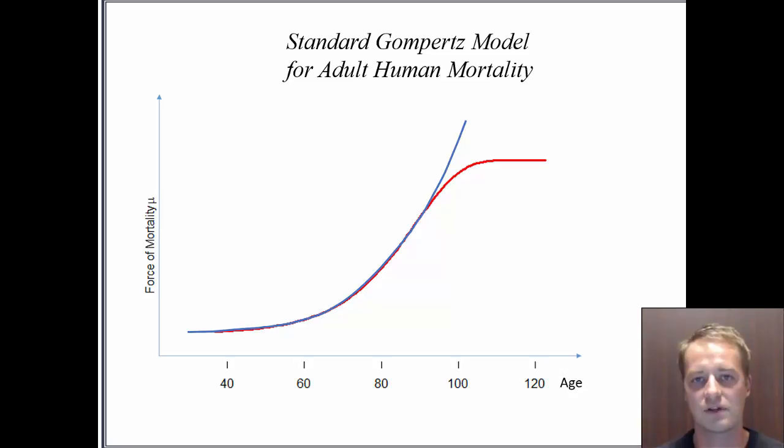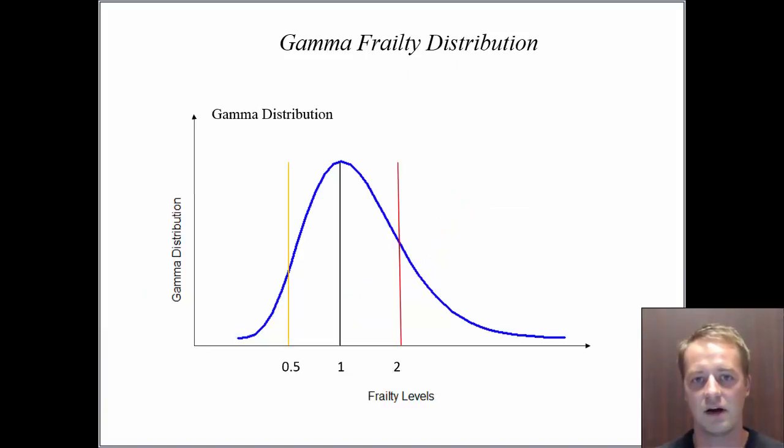We can assume that this phenomenon is caused by a multiplicative effect of unobserved heterogeneity on the force of mortality, which we also call frailty. The frailty leads to a compositional change of the population over time and can, for example, be gamma distributed. A frailty level of 1 represents the standard frailty, whereas larger values indicate a higher frailty and lower values a lower frailty respectively.